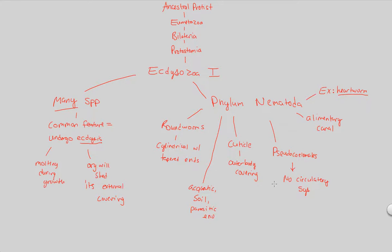Just remember that of all these things, all these things include the fact that the nematoda undergo molting during growth and shed their external covering. That's our first view of ecdysozoa. We'll continue ecdysozoa in the next video.